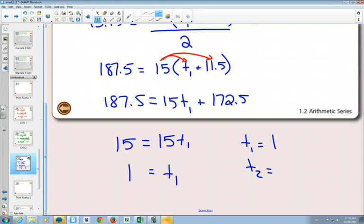Term 2 is going to be 1.75. And term 3 is going to be, add 0.75 again, 2.5. There's term 1, there's term 2, there's term 3.